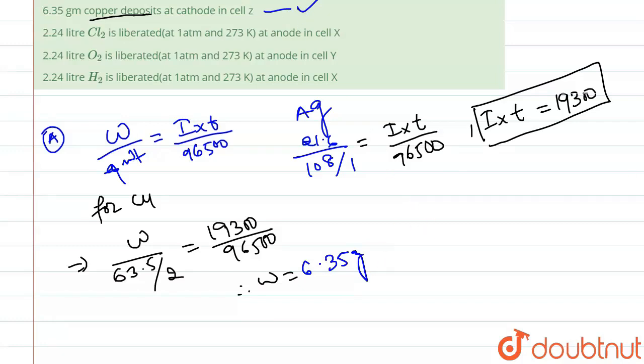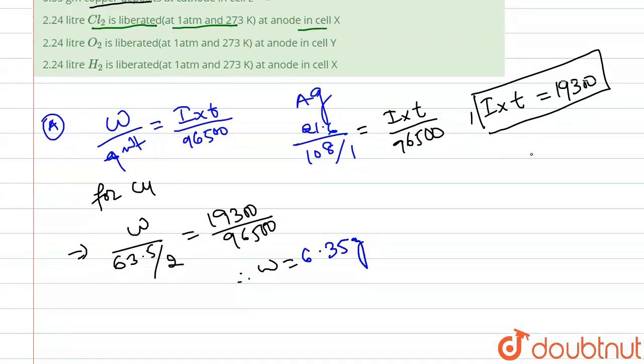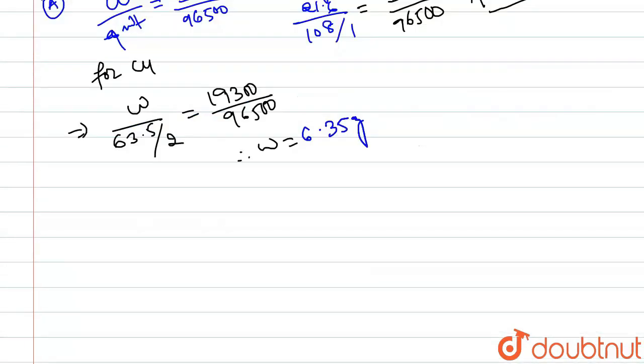Let's move to our statement B. Statement B is 2.24 liter of Cl2 is liberated at 1 atm and 273 K at anode. Let us write the equation for anode. The reaction will be 2 Cl⁻ gives Cl2 plus 2 electron liberated.